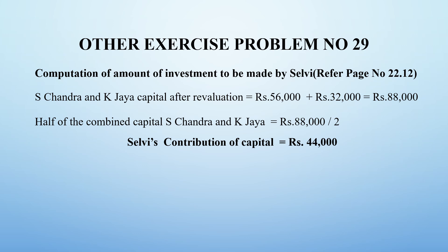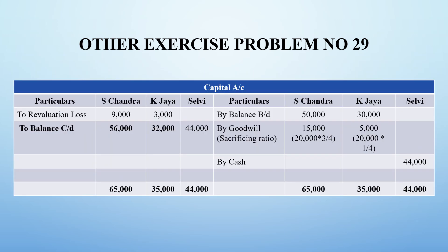We get a revaluation loss since all asset values decreased, so we debit 9,000 and 3,000 rupees. The balancing figure gives 56,000 for S. Chandra and 32,000 for K. Jaya as the capital values of old partners. Grand total on both sides is 65,000 and 35,000. After this, we do one working note: adding both partners' capitals after revaluation - 56,000 plus 32,000 gives 88,000 rupees. Selvi's capital contribution is half of the combined capital of S. Chandra and K. Jaya after revaluation, so half of 88,000 is 44,000. Therefore Selvi's capital is 44,000 rupees. Back in the capital account, Selvi's column shows 44,000 on the credit side by cash, giving a grand total of 44,000 on both sides.